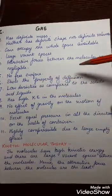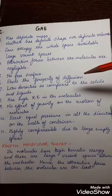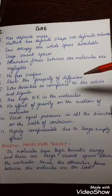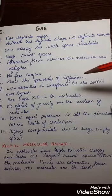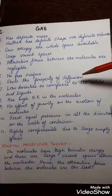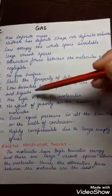Gases show the property of diffusion. This can be understood by taking the example of incense sticks. If we burn incense sticks in one corner of a room, we observe that the fragrance spreads throughout the room. This is because the volatile compounds given out by incense sticks diffuse into the air and spread in all directions, demonstrating the property of diffusion in gases.